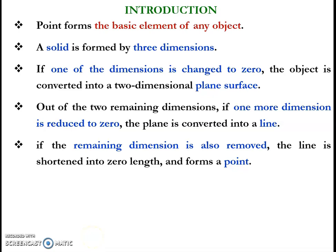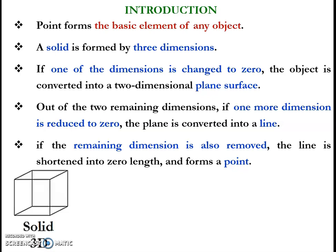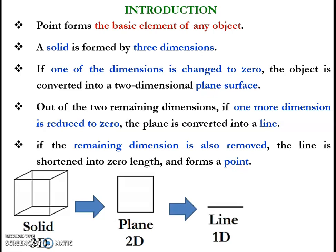The point is a basic element of any object. Let us consider a three-dimensional solid as an example. We know that a solid is formed by three dimensions. When one of the dimensions of the solid is changed to zero, the solid will become a two-dimensional plane. Out of the two dimensions of the plane, if one more dimension is reduced, it will become a one-dimensional line. If that one dimension of the line is also removed, the line will become the point.